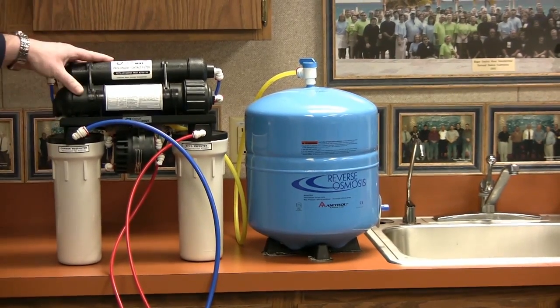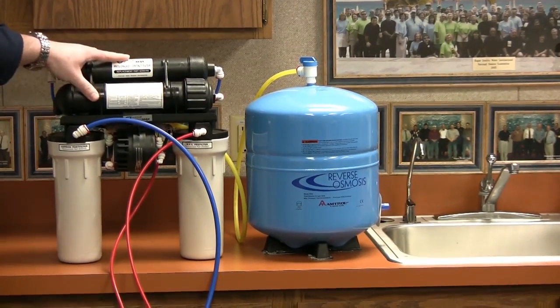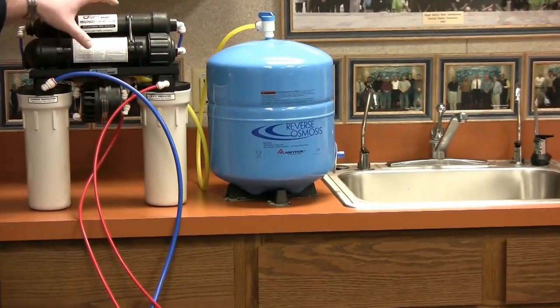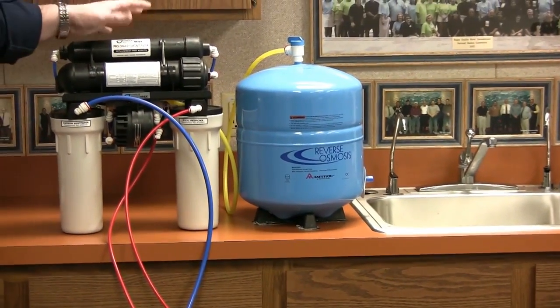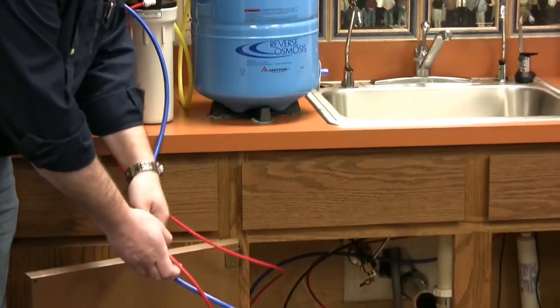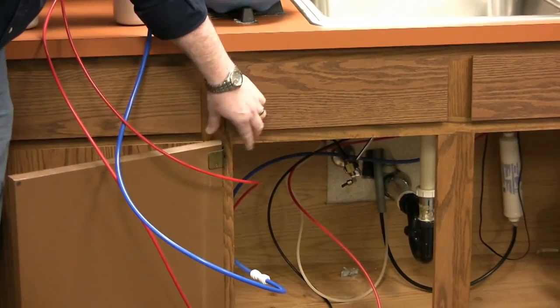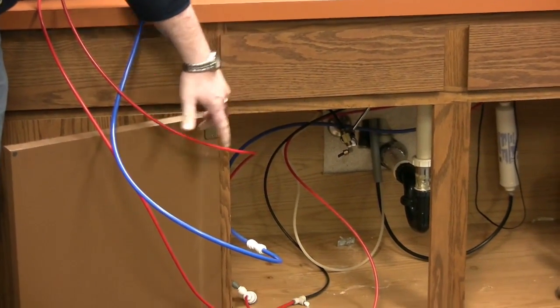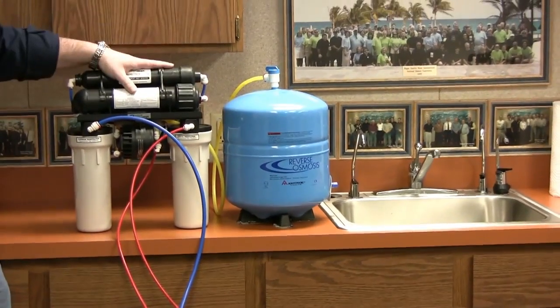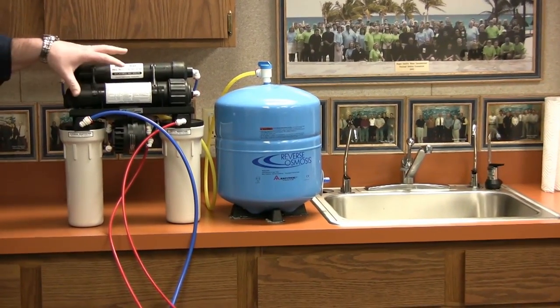What we've got set up here is a typical RO installation underneath the kitchen sink. What I've done for easier access and for shooting the video purposes is extended some of the lines to reach from the air cap hookup, the raw water feed, and the drain so that I can actually set the RO and the storage tank on top of the countertop to give me full access.